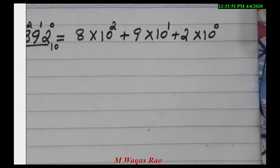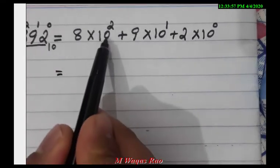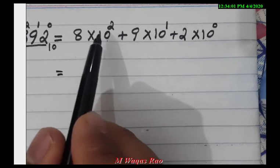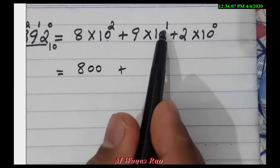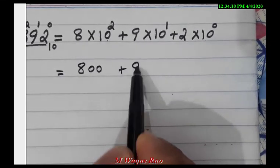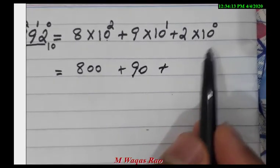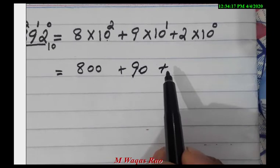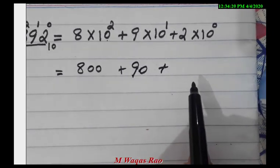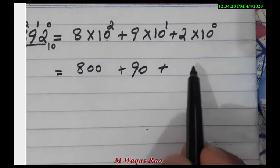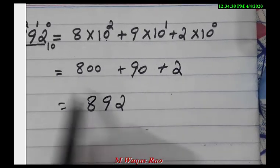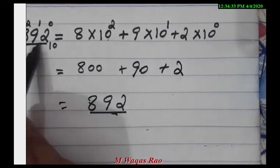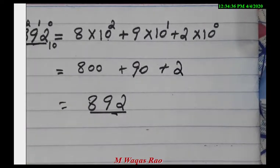If we solve this: 10 to the power of 2 equals 100, and 100 multiplied by 8 equals 800. Then 10 to the power of 1 equals 10, and 10 multiplied by 9 equals 90. Any value with an exponential power of 0 equals 1, so 1 multiplied by 2 equals 2. Adding 800, 90, and 2 gives us 892, the same number we started with.